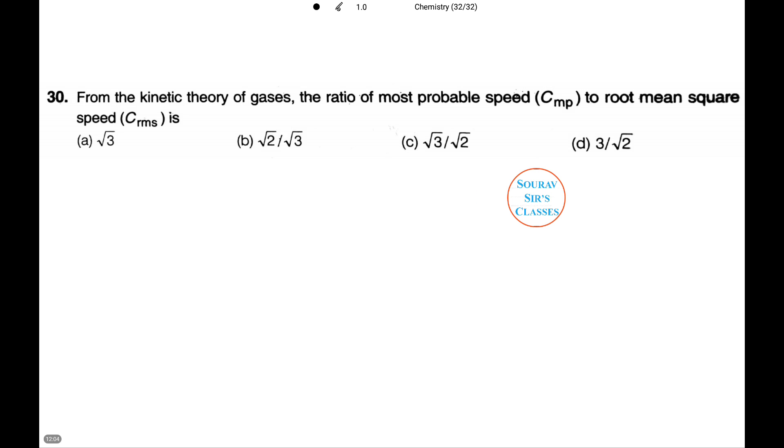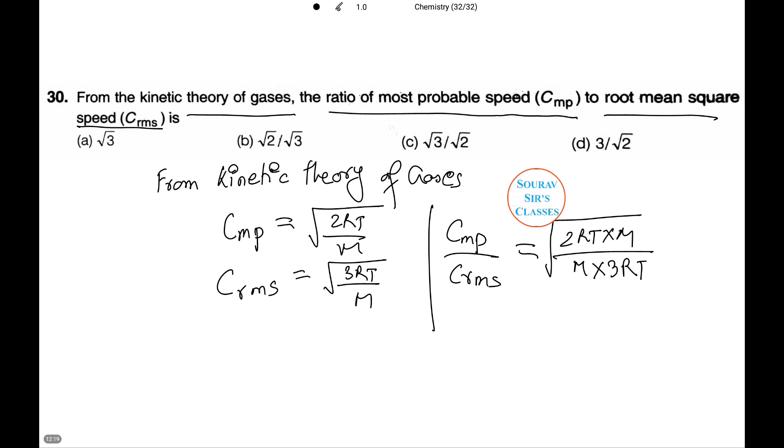Now we have a question from kinetic theory of gases. From the kinetic theory of gases, the ratio of most probable speed CMP to root mean square speed, that is CRMS. C most probable equals square root of 2RT by M. CRMS equals square root of 3RT by M. Taking the ratio we find it comes to square root of 2 by 3. Thus the answer is option B.